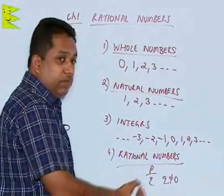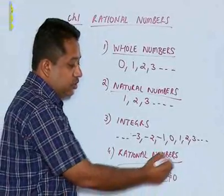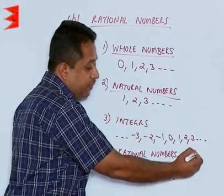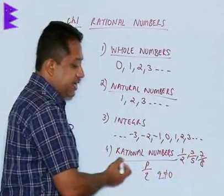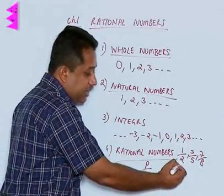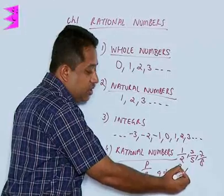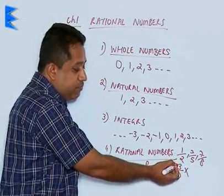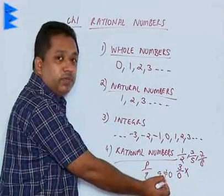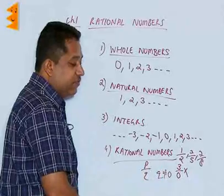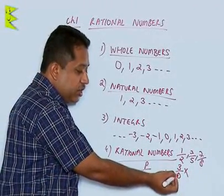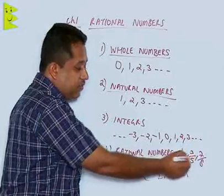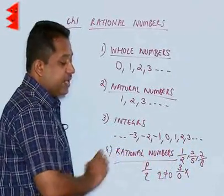P and Q can be any number but Q should not be equal to 0. We can have any fraction 1 by 2, 3 by 5, 7 by 8, all these are rational numbers. But when we take 3 upon 0, it is not a rational number because it is impossible to divide any number by 0 because the result is infinity or not defined. So except for this case where the denominator is 0, all other fractions can be considered as rational numbers.